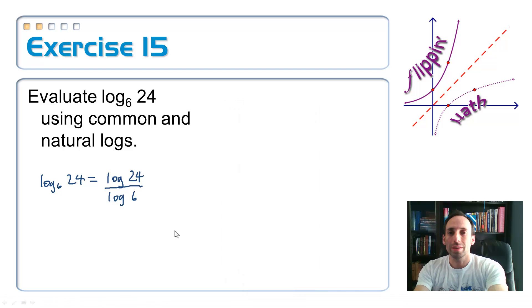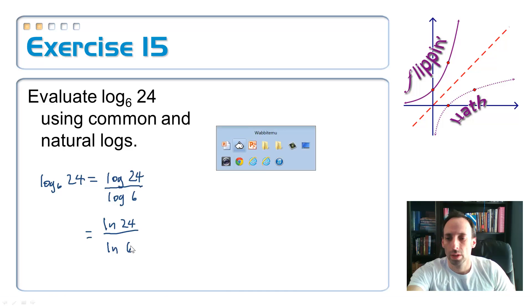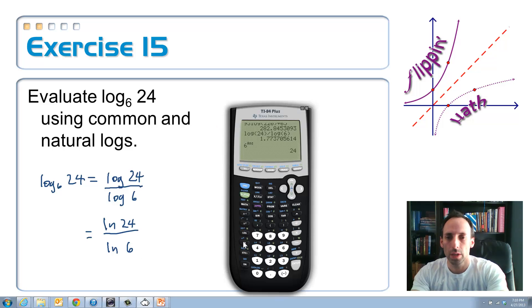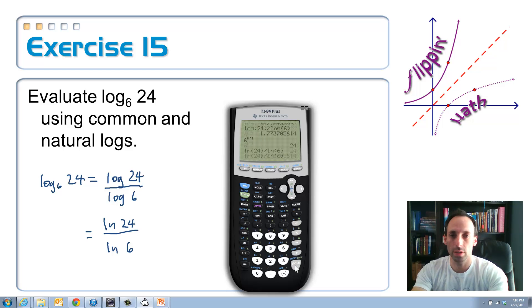So, let's do the same thing with natural logs. So, with natural logs, this would just be the natural log of what I want to take the log of, 24, divided by the natural log of the original base, which is 6. So, in the calculator, natural log 24, close the parentheses, divided by the natural log of 6. Close those parentheses. And look, I get the exact same number. It's foolproof.